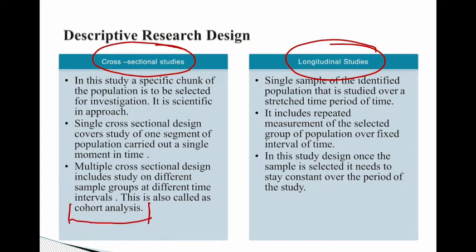If you are covering a single segment of the population, your research design is called single cross-sectional design. If you are covering different sample groups at different time intervals, it is categorized as multiple cross-sectional design. In cross-sectional research, we take a specific set of population and, as always, a sample is drawn and you proceed accordingly. Longitudinal studies, on the other hand, mainly cover a single sample, but you study that same sample over a longer period of time — the sample remains the same across different time periods.